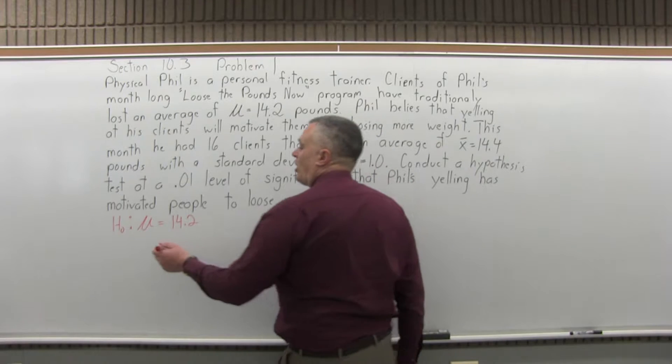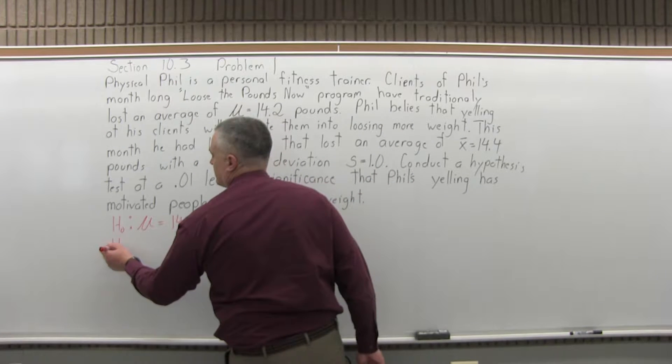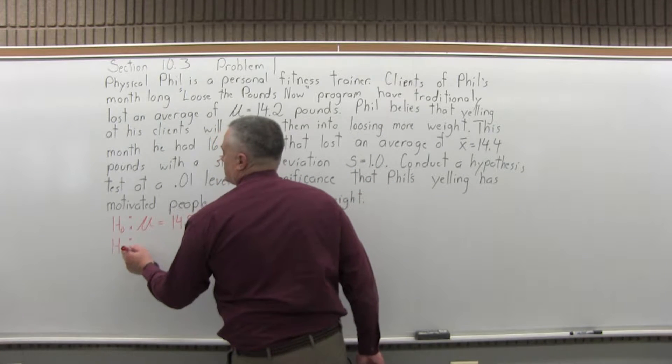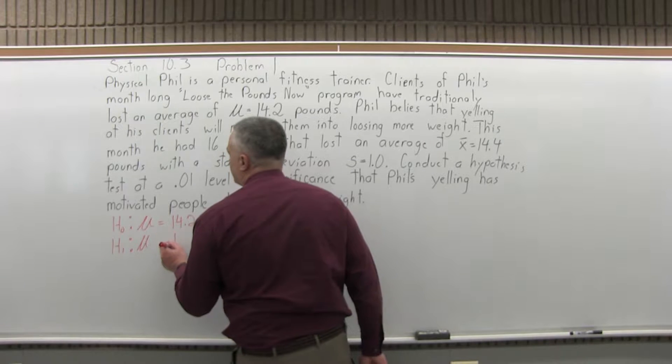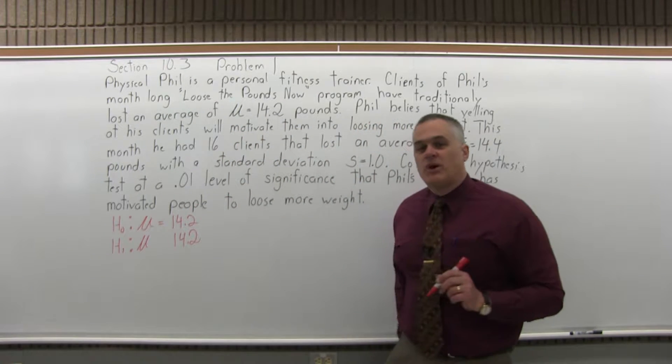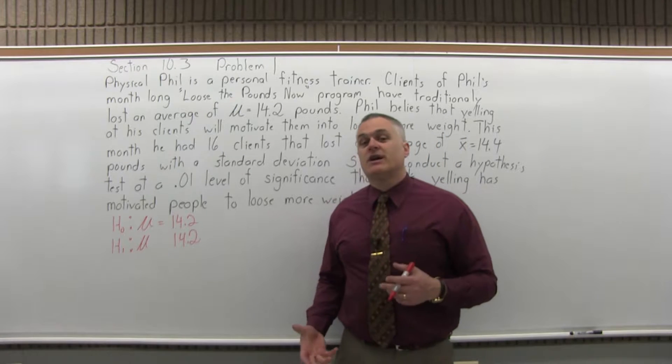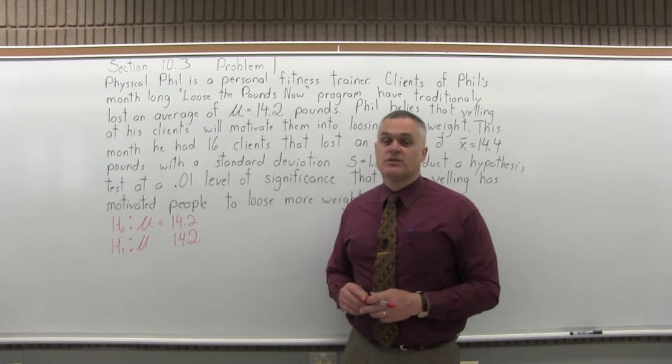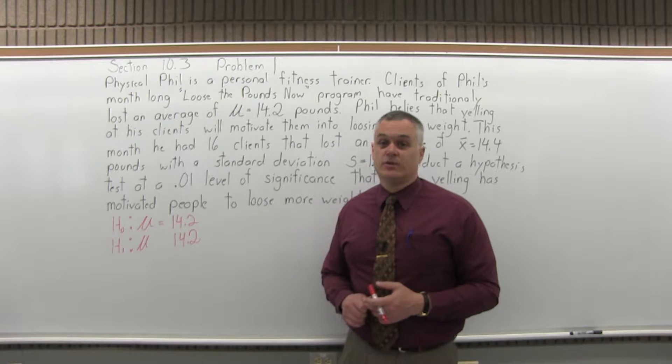Step two, state the alternate hypothesis. The symbol is capital H sub 1. You'll have the same mu and the same number, but now an inequality symbol, or possibly a not equal to, that does not contain the condition of equality. So you'll have a greater than or less than or a not equal to.